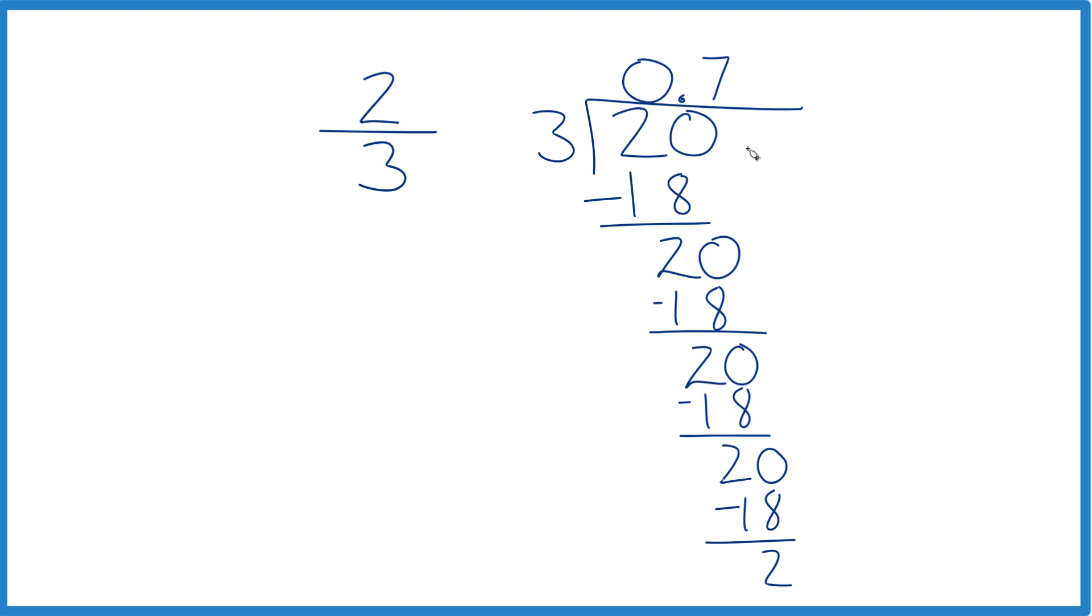The other way you could do this, if you end up with all these sixes here, you could just put a bar over it here to show that it repeats. Then you get rid of these. And that's really accurate. That means that it goes 0.6 all the way out forever.